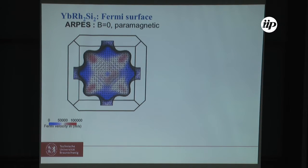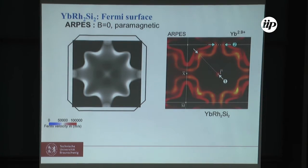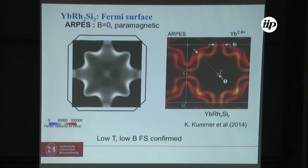Now let me come to YbRh2Si2. The predicted Fermi surface, viewed from the z-direction, matches what is observed experimentally. It is confirmed that in YbRh2Si2, in vanishing magnetic field in the paramagnetic state, the Fermi surface has f-electrons with band character contributing to the Fermi volume.